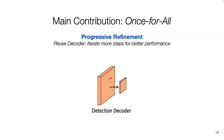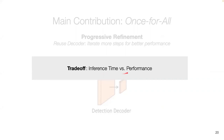The other aspect of once-for-all training is progressive refinement occurring in the detection decoder. The idea is that we can reuse the decoder head and iterate more steps for better performance — again a trade-off between inference time and performance. You can choose to iterate more steps and get more precise boxes, at the cost of inference time. Compared to other methods like DETR, iterating more steps improves DiffusionDet's results, whereas in DETR it actually decreases performance.